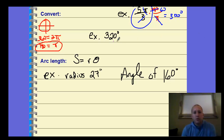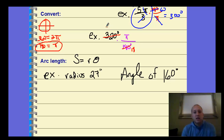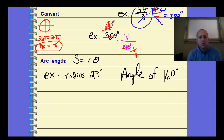We can also go the other way. If we have 320°, multiply by π/180 so the degree units cancel out. Then reduce the fraction: divide both by 10 to get 18 and 32, then divide by 2 to get 9 and 16. You can't reduce further, so 320° equals 16π/9 in radian form.